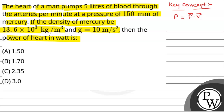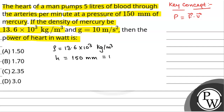We have been given density of mercury, that is equal to 13.6 × 10³ kg per meter cube, and height of mercury is 150 mm of Hg. So this will be equal to 150 × 10⁻³ meter. Therefore, pressure will be equal to ρgh.